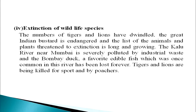Next is extinction of wildlife species. The number of tigers and lions has dwindled. The Great Indian Bustard is endangered, and the list of animals and plants threatened with extinction is long and growing. The Kalu River near Mumbai is severely polluted by industrial waste, and the Bombay duck — a favourite edible fish once common in this river — has been lost forever. Tigers and lions are being killed by poachers. We now have evidence of environmental backlash not only at the global level but also at the regional and local levels.